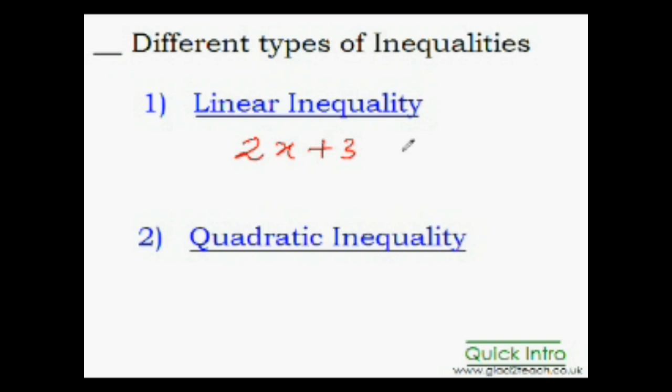The first example that I gave you, 2x plus 3 greater than 5. Since here the power of x is 1, there is an invisible one, so this is a linear equation. Obviously the inequality that would be created would be a linear inequality.